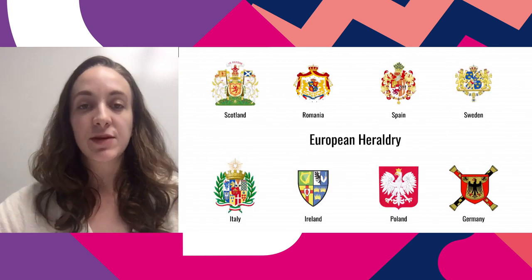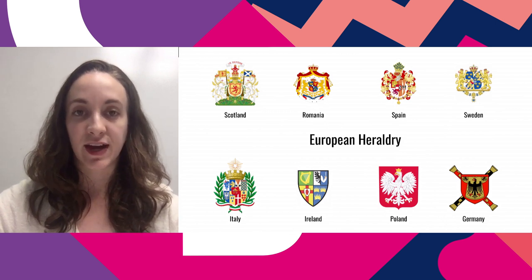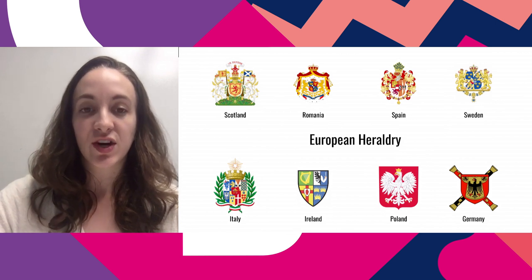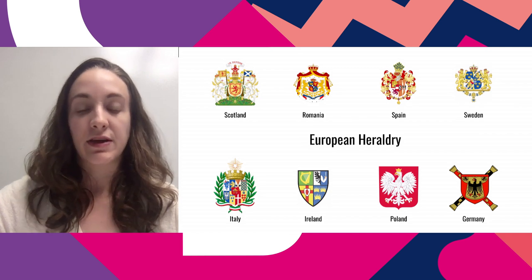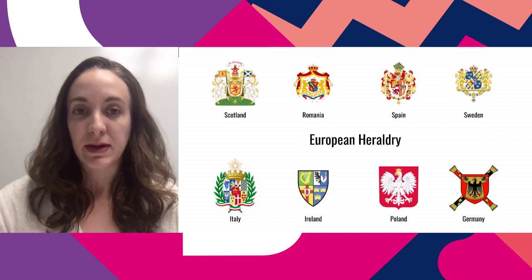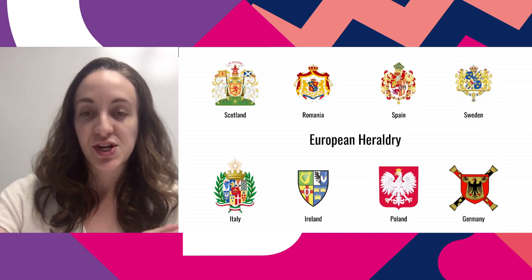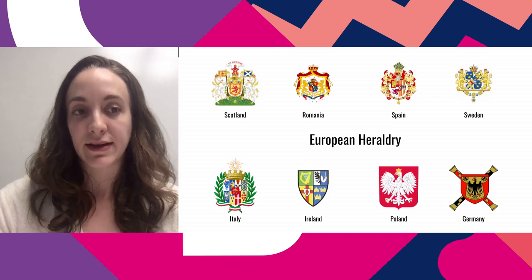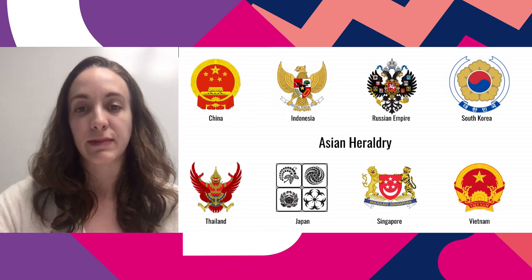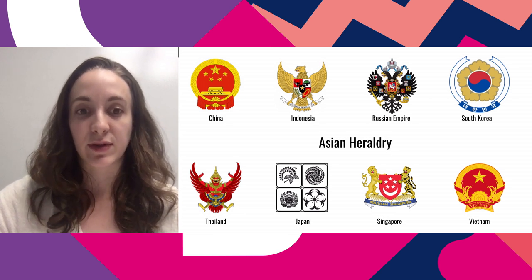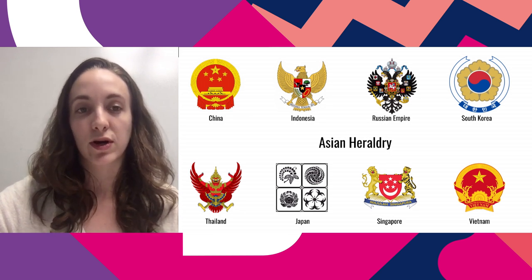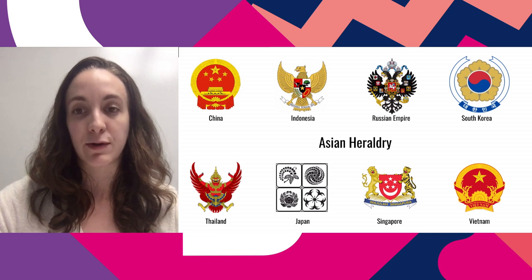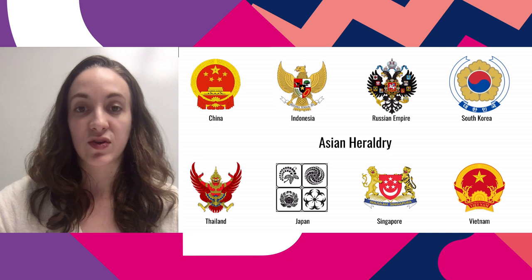Now let's look at what coats of arms look like. The ones people are probably most familiar with are from Scotland or Ireland. In the top row you can see design commonalities — two figures on either side, a shield in the forefront, some type of crown symbol, and maybe a motto. Asian heraldry from China and South Korea looks more like seals — round and bold. The Russian Empire coat of arms shows Western influence, and the Japanese Kamon are emblems used to represent houses.